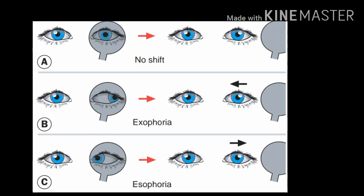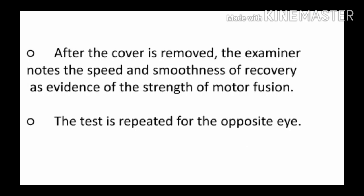If on uncovering the right eye it moves temporally, this is esophoria. If on uncovering the right eye it moves upward to take fixation, it is called hyperphoria; if it moves downward to take fixation, it is called hypophoria. In the figures: Figure A — no movement on removing the cover means orthophoria. Figure B — the eye deviated temporally under the occluder; on removing the cover, the left eye moves nasally to take fixation — this is exophoria. Figure C — the eye deviated nasally under cover; on removing the cover, the left eye moves from nasal to temporal side — this is esophoria. After removing the cover, note the recovery speed, then perform the same test on the other eye at both near and far distances.